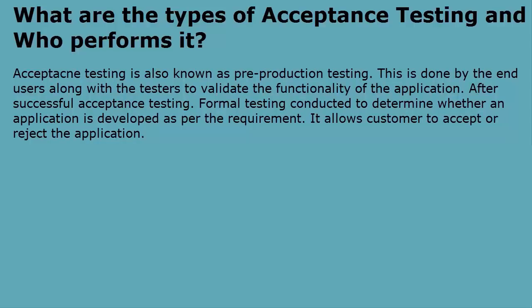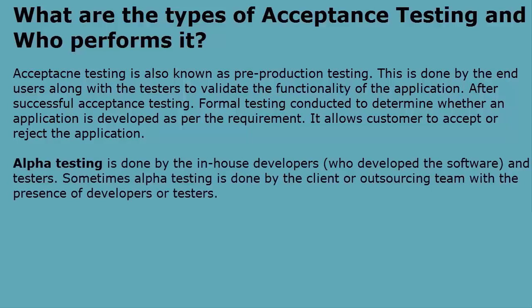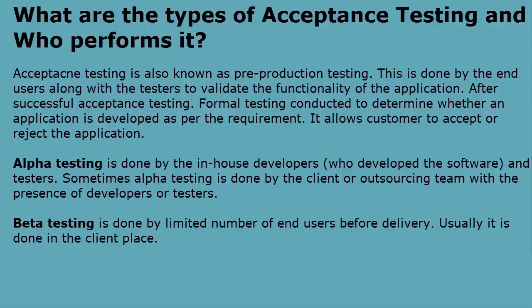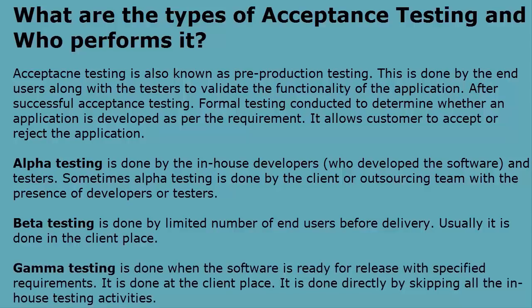Acceptance testing is also known as pre-production testing. It is done by the end users along with the testers to validate the functionality of the application. After successful acceptance testing, formal testing is conducted to determine whether an application is developed as per the requirement. It allows the customer to accept or reject the application. Types of acceptance testing are alpha, beta, and gamma. Alpha testing is done by in-house developers and testers; sometimes it is done by the client or outsourcing team in the presence of developers and testers. Beta testing is done by a limited number of end users before delivery, usually at the client's place. Gamma testing is done when the software is ready for release with specified requirements, done at the client's place by skipping all in-house testing activities.